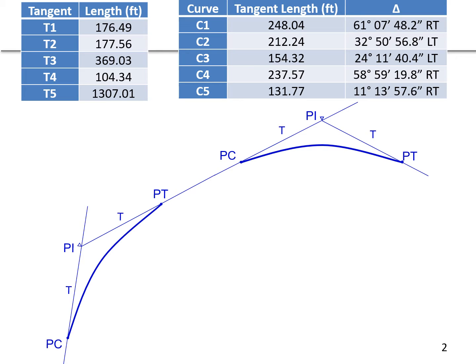Further illustrating what we're looking at with the tangent table and curve table: we're being provided the minimum amount of information needed to solve the problem. In the tangent table we're only given the lengths. In the curve table we're given the tangent length T and the delta — how much one tangent departs from the next. At the end of those angles we see RT and LT, telling us which direction the curve is turning.